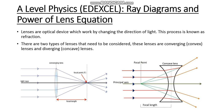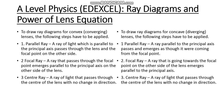For a converging lens, we apply three steps to draw ray diagrams. Step one: draw a parallel ray — a ray of light parallel to the principal axis passes through the lens and through the focal point on the other side. Step two: draw a focal ray — a ray that passes through the focal point emerges parallel to the principal axis on the other side of the lens. Step three: draw a center ray — a ray of light that passes through the center of the lens with no change in direction.